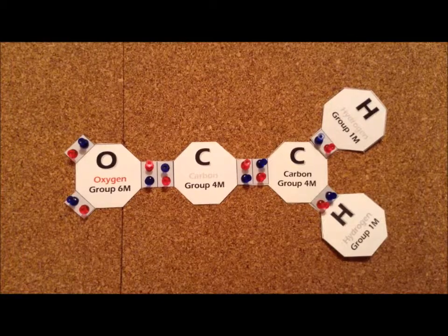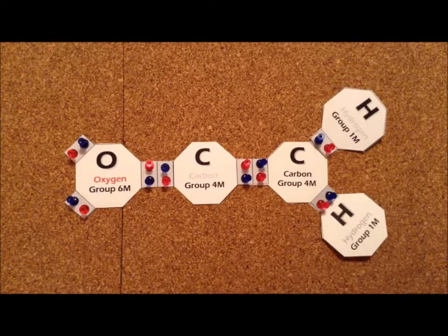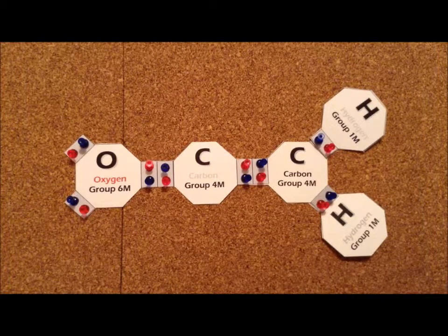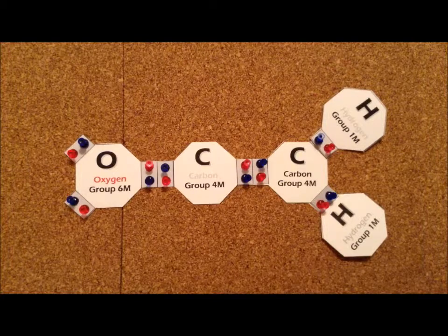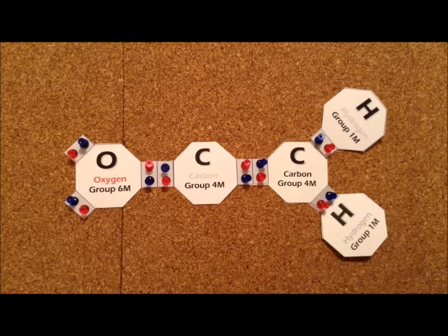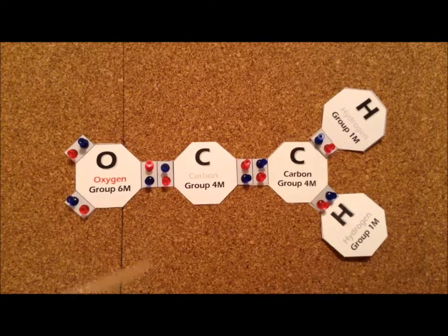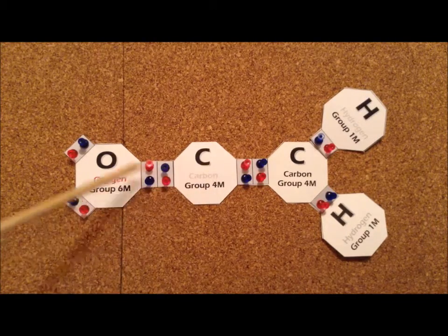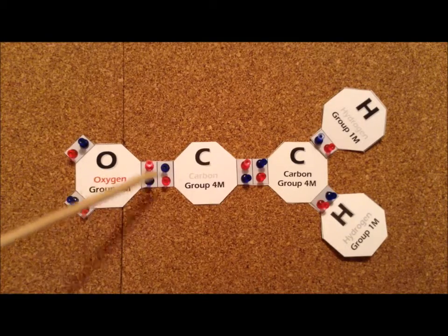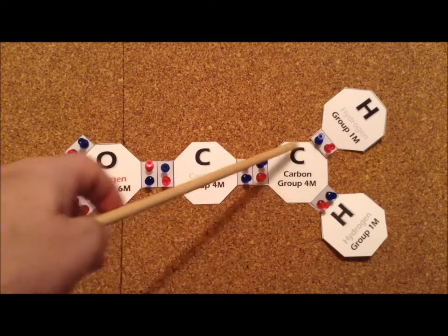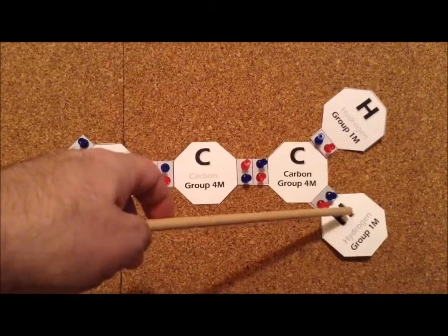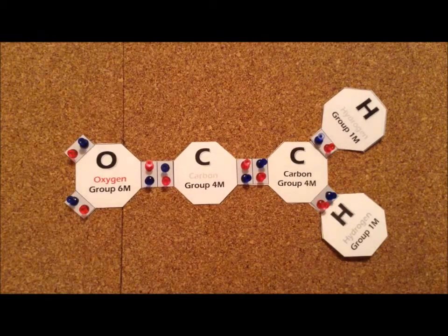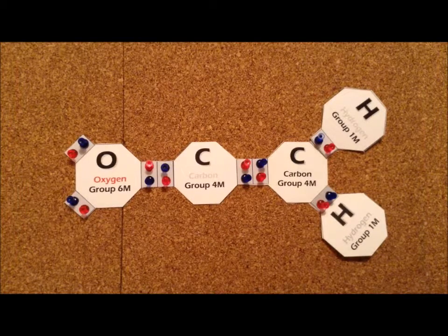Here we have an interesting compound, which is called ketene, and it has a total of 16 electrons. We can see right away it's a 16 electron system. It bears a certain resemblance to carbon dioxide, and we notice that we have C double bond O over here. And if we replace the oxygen that used to be over here with a CH2 group, which has the same number of electrons, we can see the family resemblance between ketene and carbon dioxide.